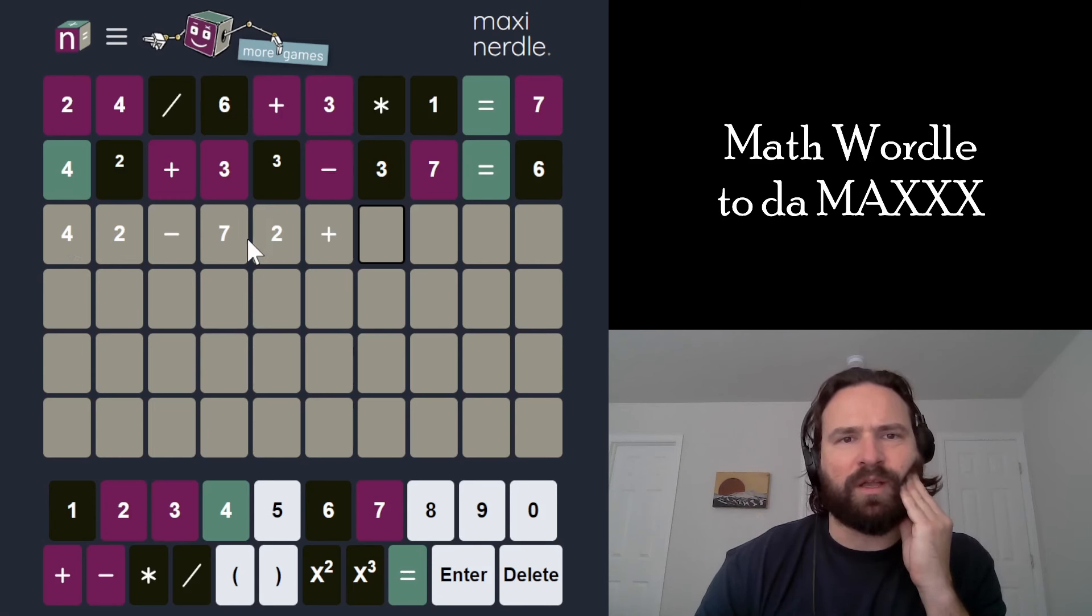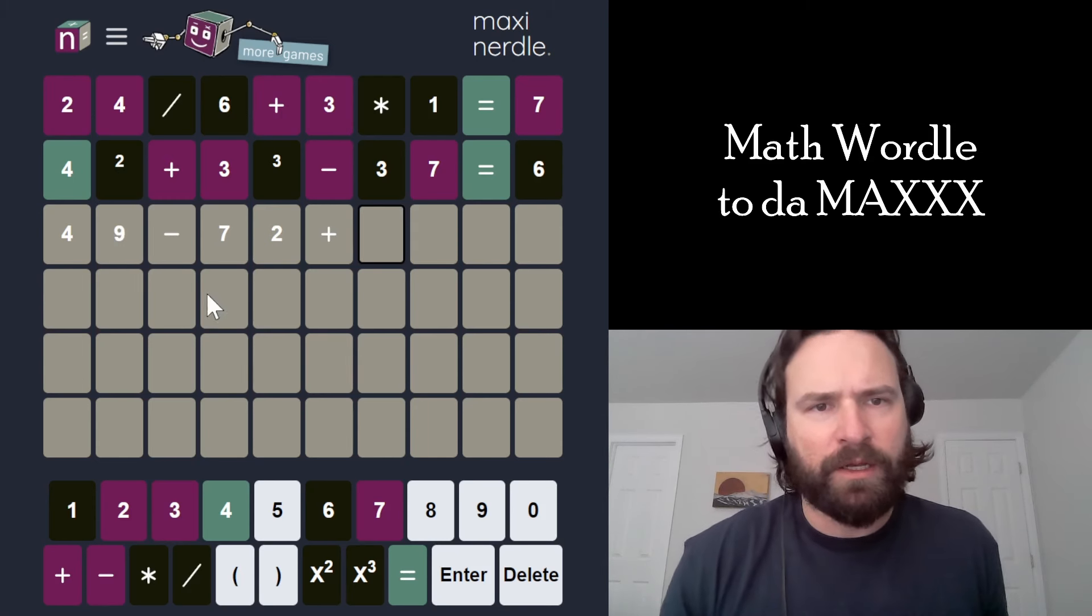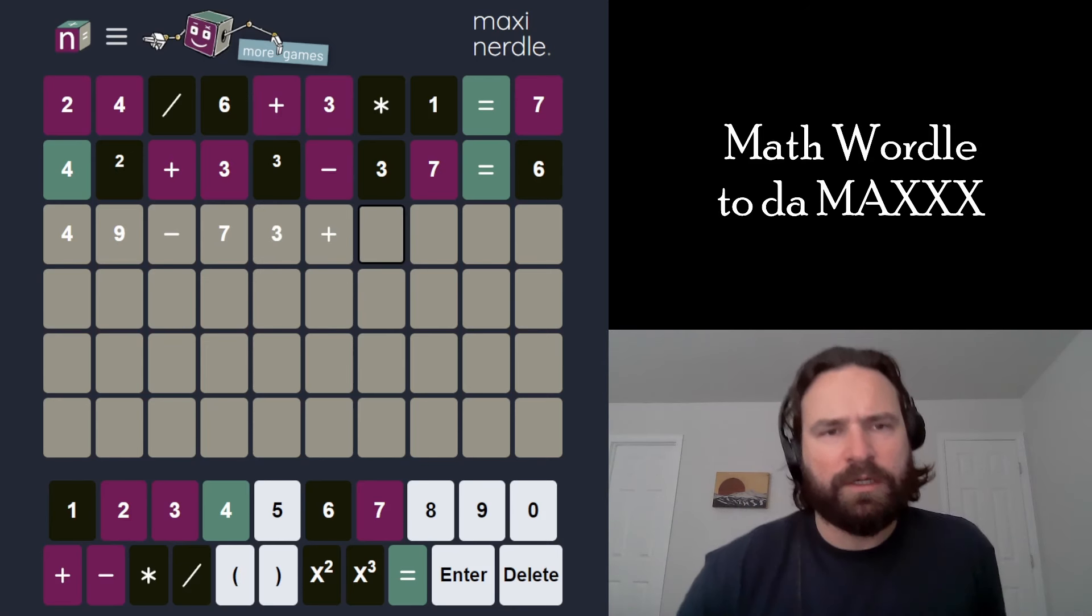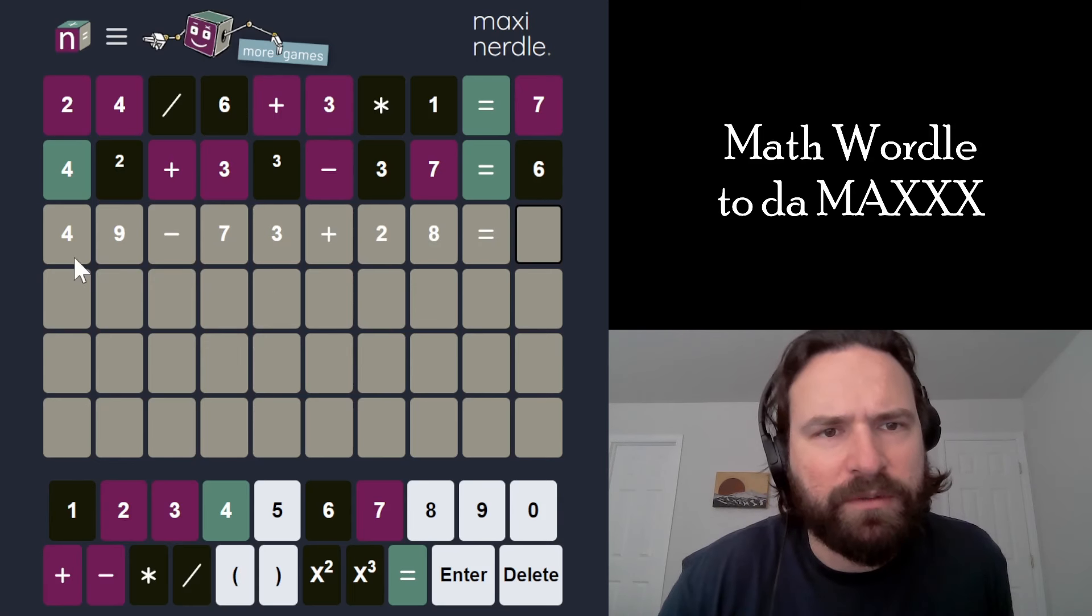Okay. So the 3 is actually pretty limited in where I can go at this point. If I make these numbers pretty big, and I can do that because I have a 9 and an 8 still remaining, then I can do 20-something here. So maybe I do the 3 here. So 49 minus 73 plus 28. I think that'll give us a single-digit number, something like that.